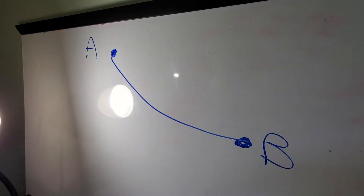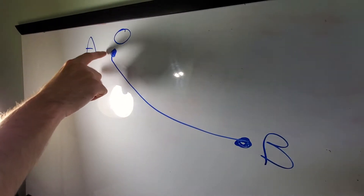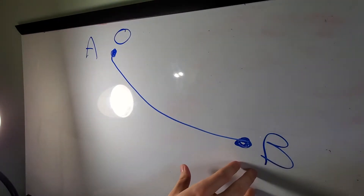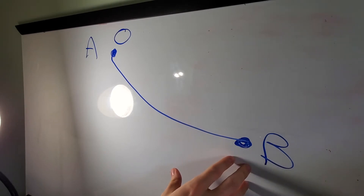The brachistochrone problem came up around the time of Newton and the Bernoulli brothers. It asks: if you have an object falling down some path from point A to point B, what is the fastest path? The solution is called the brachistochrone curve. One way to derive it uses calculus of variations, which yields the equations of a cycloid. It turns out the brachistochrone curve is actually part of a cycloid.